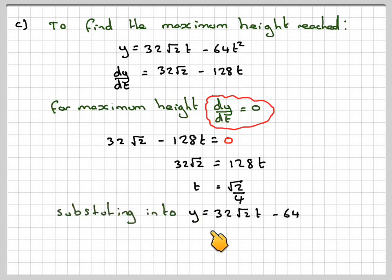If we now substitute into y, because we only need to find the height, substituting that value in, we'll get 32√2 times √2 over 4. You're going to use a calculator, make sure you use the fraction button, minus 64 times √2 over 4 squared. And if you work that out, that gives you the 8 metres.